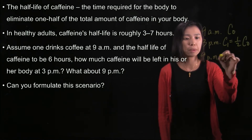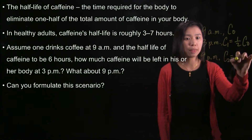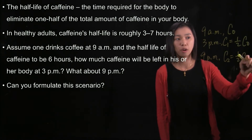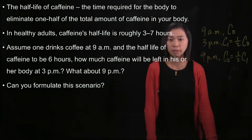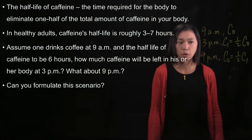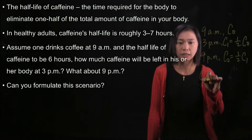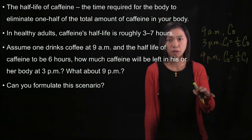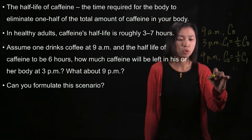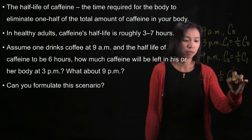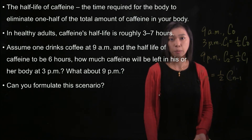At 9 p.m. we will have C-2, which is one half of C-1. So how can we formulate this scenario using difference equations? In general, we have C-n, which means the amount of caffeine in the body after n half-lives, which is half of the previous amount of caffeine inside the body.